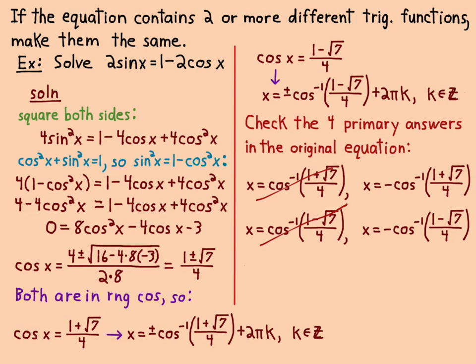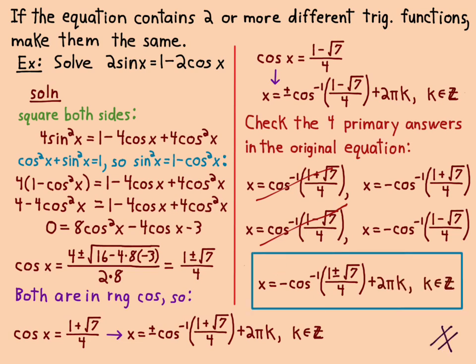The reason we have to check these and why we get spurious solutions is because I squared both sides of the equation. A squaring function is not one-to-one, so it can add extra spurious solutions. That's why I needed to check those.